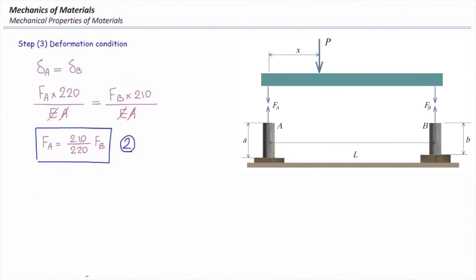Now, I can solve it for F_A and F_B, and if I do that, that gives me F_B equal to 40.93 kilonewtons, and F_A equal to 39.07 kilonewtons.